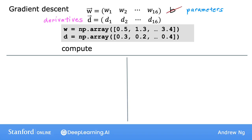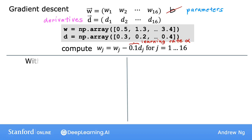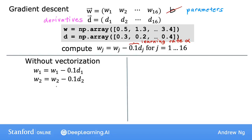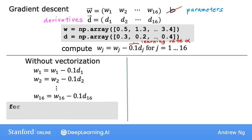Now you want to compute an update for each of these 16 parameters. So wj is updated to wj minus the learning rate, say 0.1 times dj, for j from 1 through 16. In code, without vectorization, you would be doing something like this: update w1 to be w1 minus 0.1 times d1, update w2 similarly, and so on through w16 updated as w16 minus 0.1 times d16. You could use a for loop like this: for j in range 0 to 16, set wj equals wj minus 0.1 times dj.